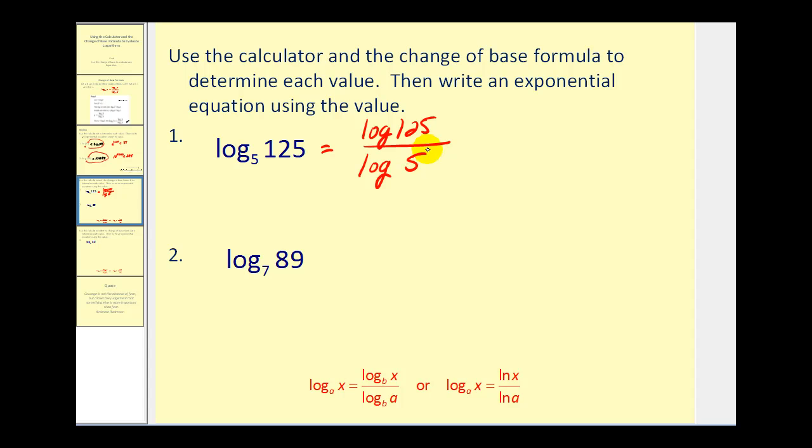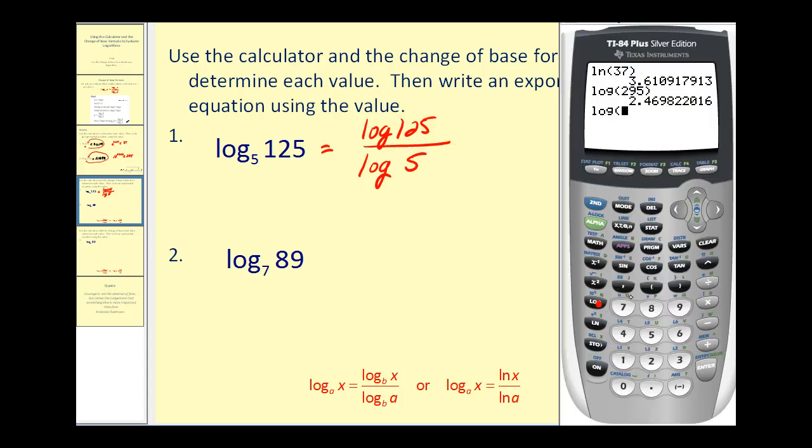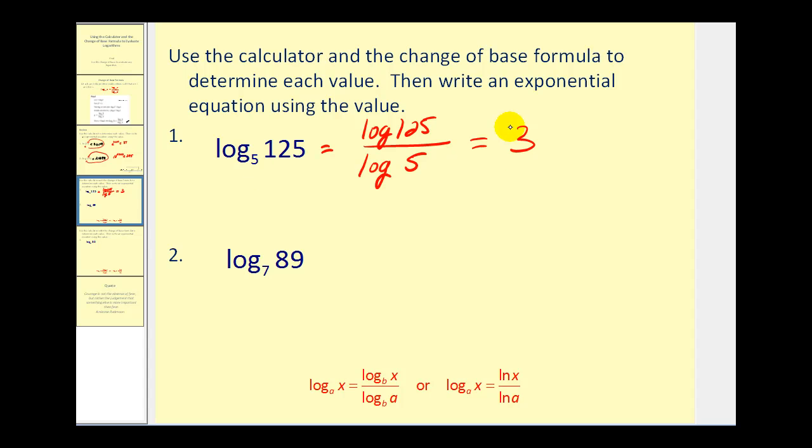And this will give us this value. Let's try it. Log 125 divided by log 5 should give us 3 and it does. And just to show that we could have used natural log, I'll take the natural log of 125 divided by natural log of 5 and we also get 3, because remember the change of base formula is valid for the log of any base. So what this means is 5 to the third power is equal to 125.